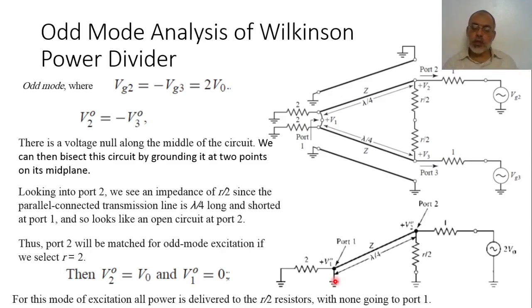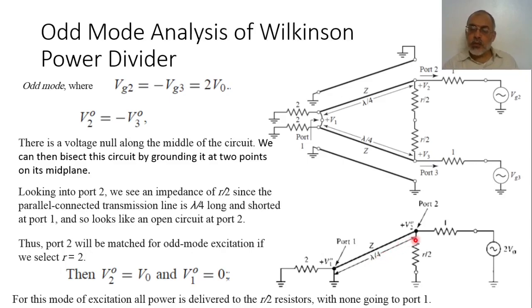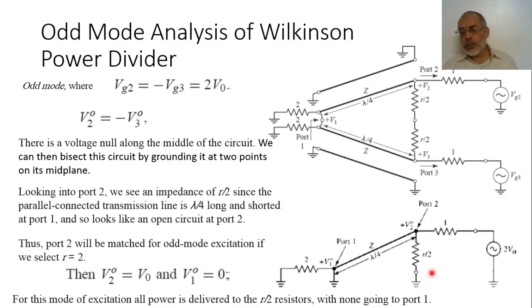The input impedance seen from this transmission line section: since there is a short circuit, the input impedance of a transmission line section with characteristic impedance Z and length lambda over four terminated by a short circuit is Z_naught times tan(beta*l). If l equals lambda over four, beta*l equals 90 degrees, so tan goes to infinity, meaning the input impedance seen from here is infinity — an open circuit. This infinity in parallel with R over two equals R over two. To match this input impedance to a transmission line section of characteristic impedance one, R over two must equal one, or in other words R must equal two.